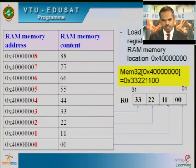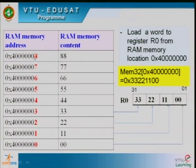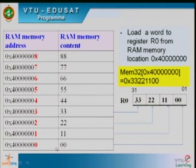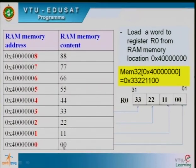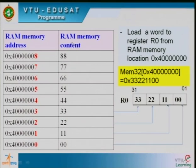Let's look at examples. The RAM memory is organized with 0x40000000 holding 0x00, 0x40000001 holding 0x11, 0x40000002 holding 0x22, 0x40000003 holding 0x33, and so on up to 0x88. To load a word to R0 from memory location 0x40000000, the content is Memory32[0x40000000] = 0x33221100. The lower memory location value goes to the lower byte of the register — this is a very important point.